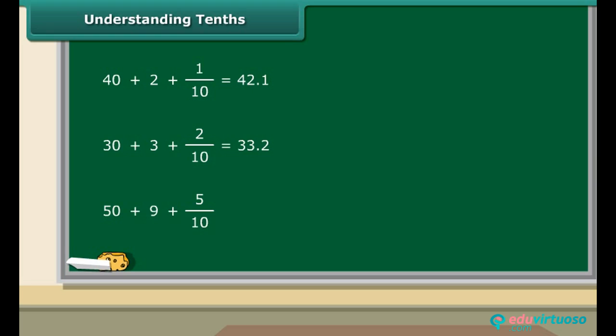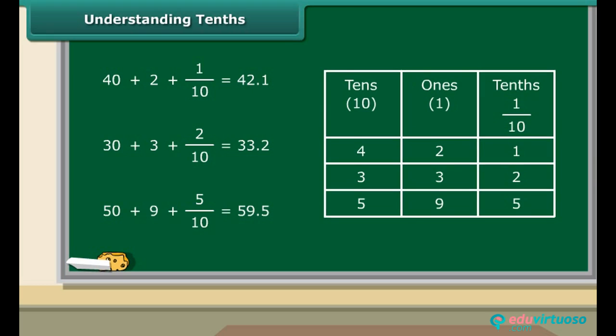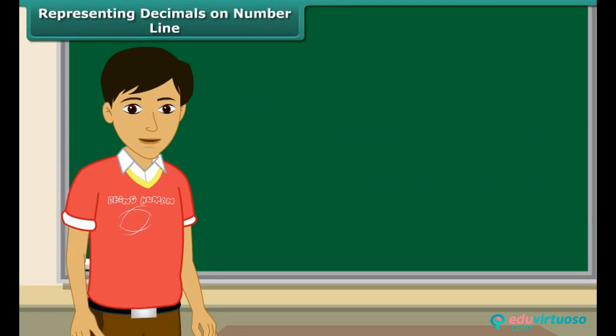Let us read these numbers from the table. 4 tens and 2 ones and 1 tenth make 42.1. 3 tens and 3 ones and 2 tenths make 33.2. Similarly, 5 tens and 9 ones and 5 tenths make 59.5.